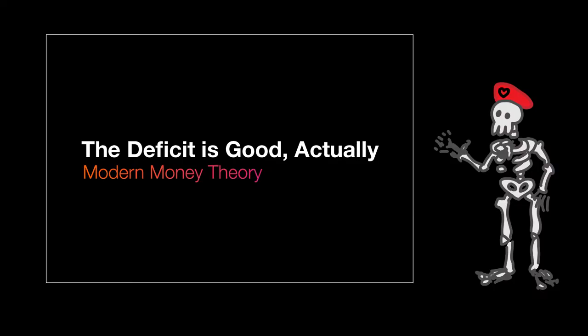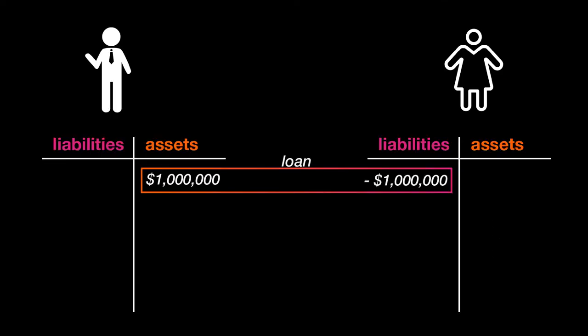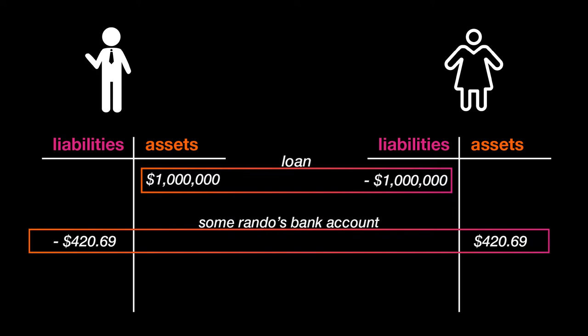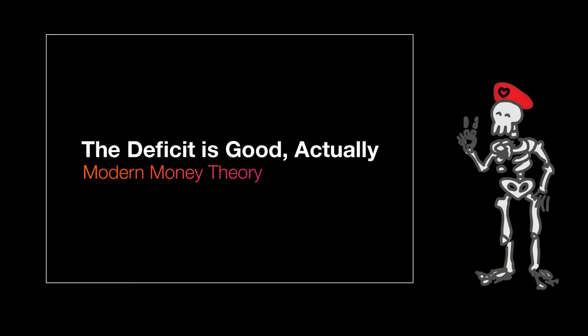But what about all that money in your bank account? Well, that's an asset to you, but a liability to the bank. Any time you can choose to go to an ATM or into one of the bank's branches and get an amount of money up to the number that's listed on your account. The bank owes you money, and you are owed money by the bank. It's all a zero-sum game.